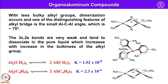If we use very bulky groups on aluminum, it is possible to stabilize the monomer. For example, with 2,4,6-trimethylphenyl groups one can have simple AlR3 in monomeric form, whereas with less bulky groups it undergoes dimerization — dissociation similar to Al2Cl6.